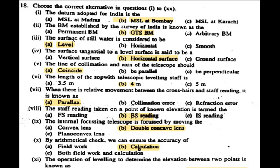Next question: The surface of still water is considered to be a level surface. Still water is considered to be a level surface, which is tangential to the level surface — that is the horizontal surface.